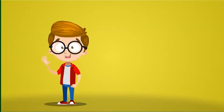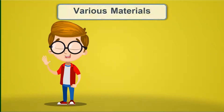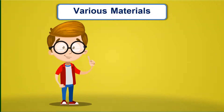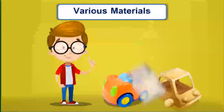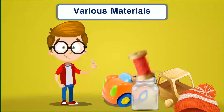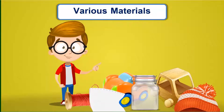This is Faddis. He has a lot of different materials including wood, plastic, glass, wool, silk, and paper.